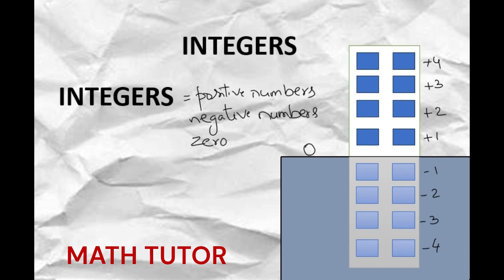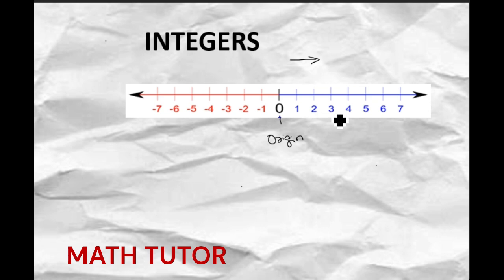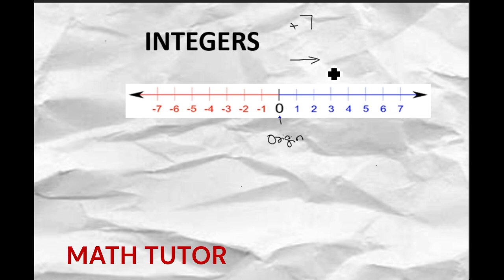Let us see the integers from the number line. This is the number line. This is the origin. On the right side of the number line we have plus 1, plus 2, plus 3, plus 4, plus 5, plus 6, plus 7. If a number is written simply without any sign, by default we take it as plus. So these are all positive numbers, which are on the right side of the number line.